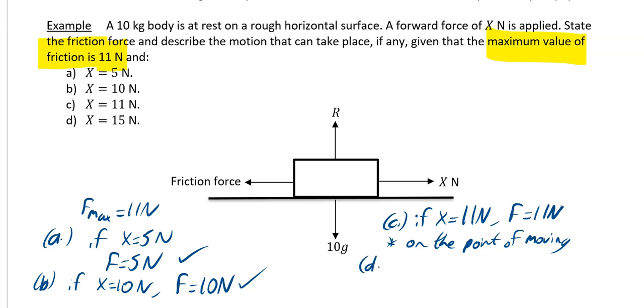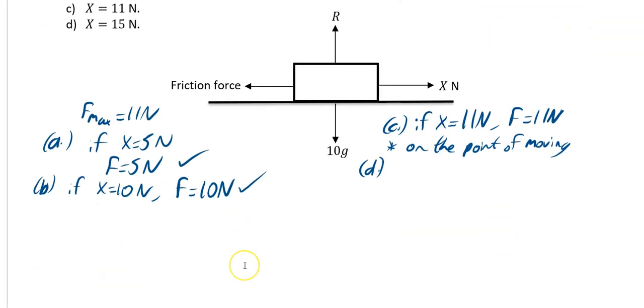Okay, part D. Your X is equal to 15, and I think I'm going to do a new diagram for this one just to show you what's going on. So your X is equal to 15. Let's just do a diagram, X equals 15. Your frictional force then, that's your F, is going to be equal to 11.